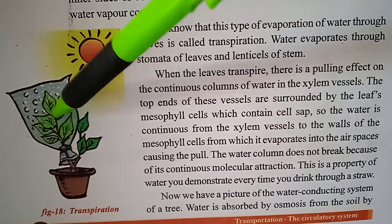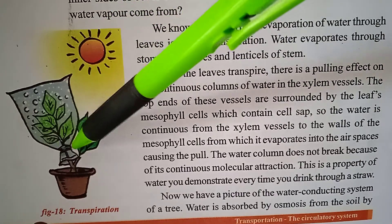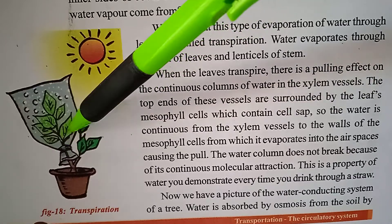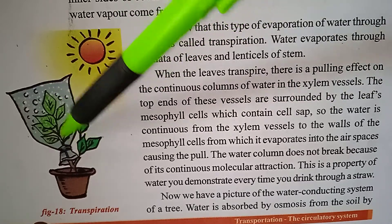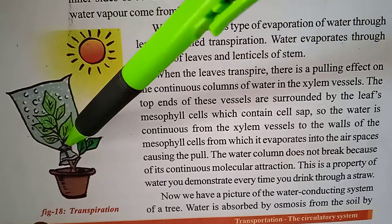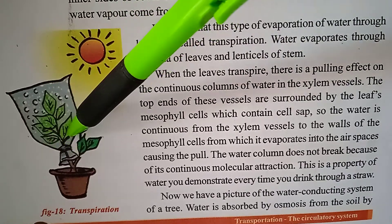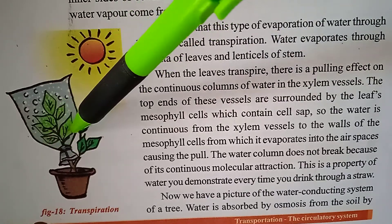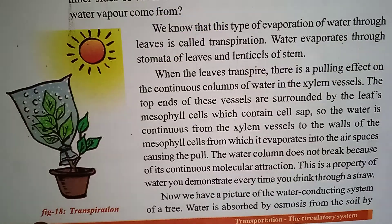Once again, I am telling you what is transpiration. The process of evaporation of water through the stomata of the leaves and lenticels of the branches is called transpiration. And this is the simple concept we discussed today. Thank you.